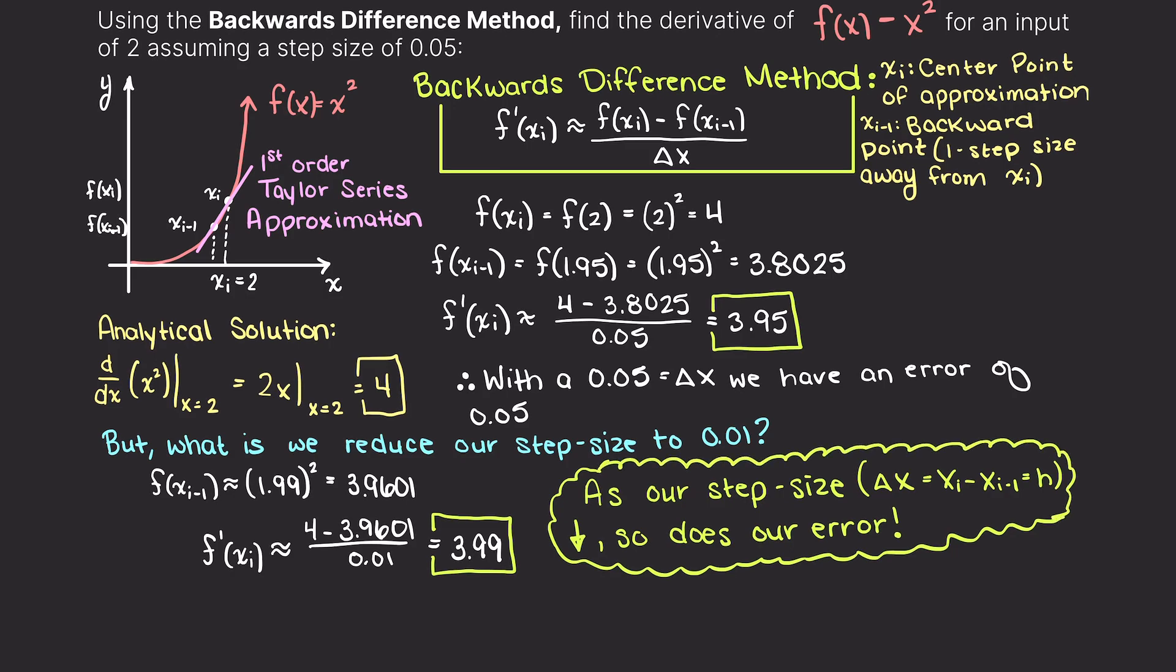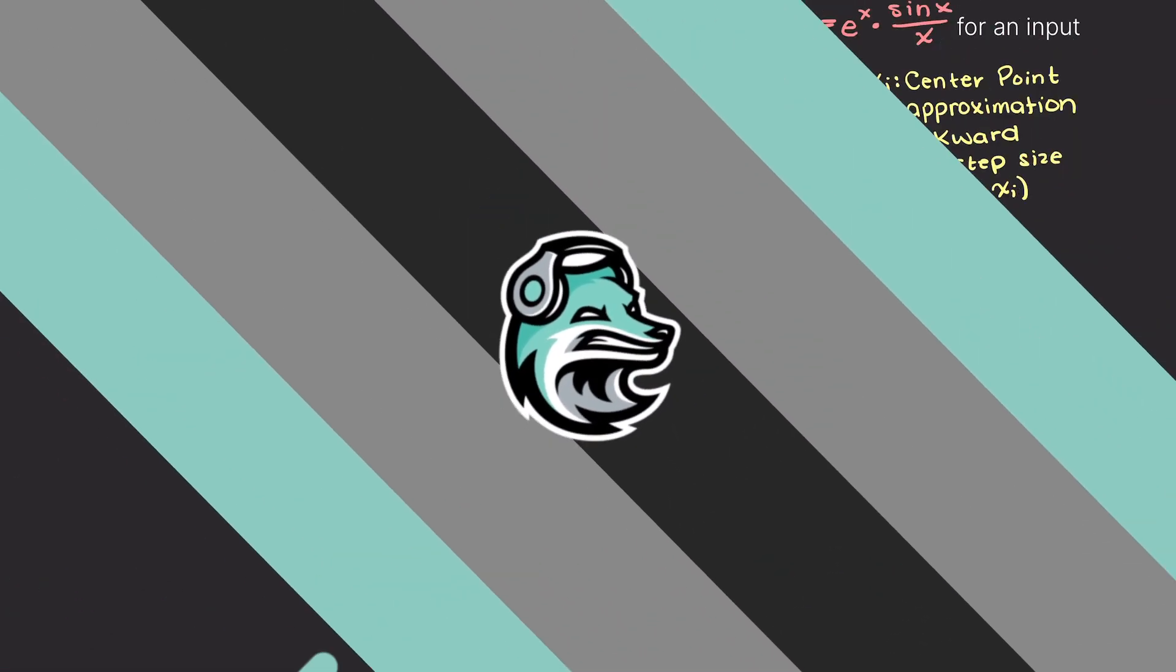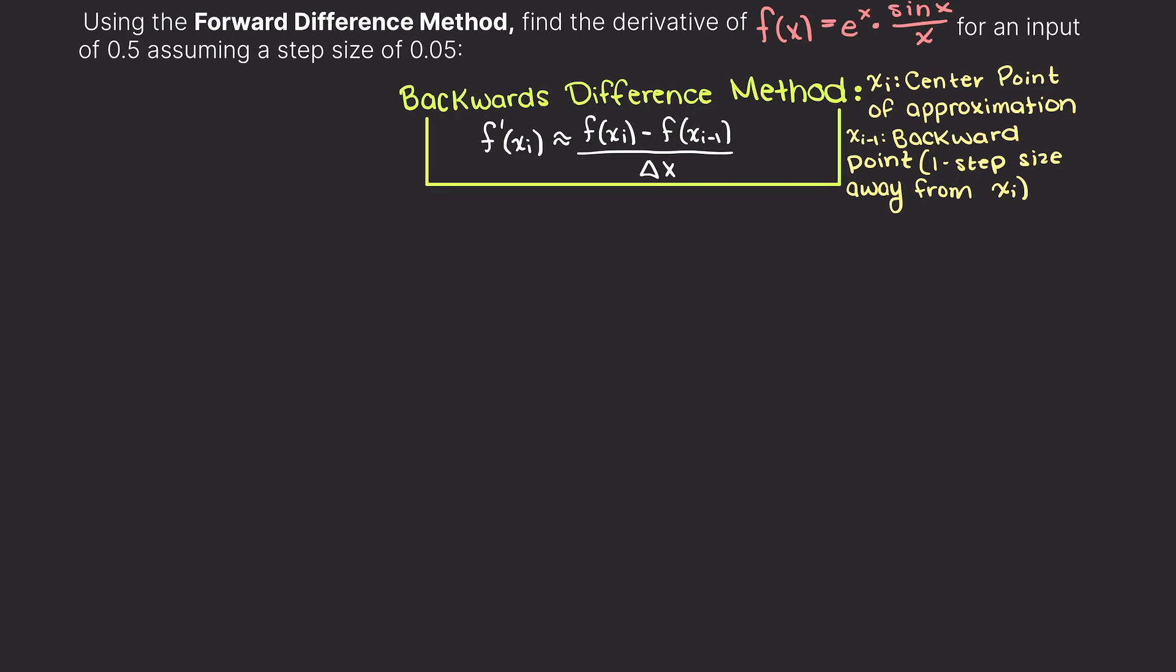Next, let's complete a more challenging problem. In this example, we are asked to use the backward difference method to find the derivative of e^x times sin(x) over x for an input of 0.5 and a step size of 0.05.